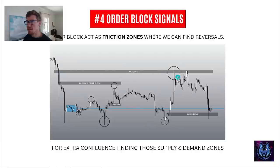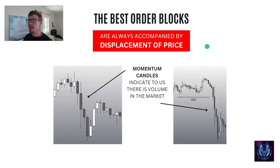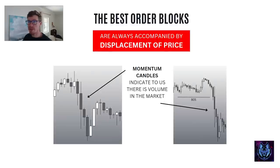Here you can see we've got an imbalance — price taps in perfectly. We've got an indecision candle. Price taps in perfectly at multiple zones. So if we add these onto the chart, they just add more confluence on top of the confirmation checklist we're already looking for. The best order blocks are always accompanied by a displacement of price — we get these big momentum candles, which indicates volume, big orders being placed, and that the big players are present in the market.